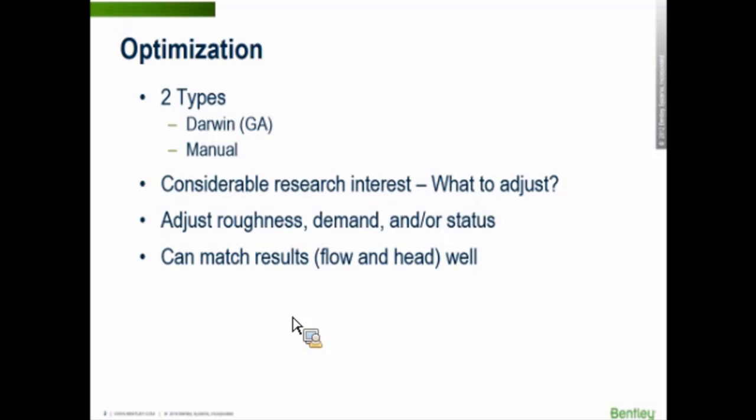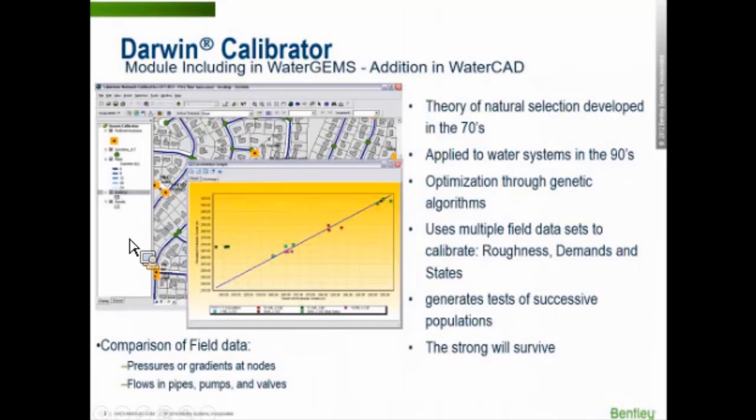So let me introduce Darwin Calibrator here and what it actually does. It uses a genetic algorithm to change roughness, demands, and valve states across the system. There could be 500 valves, a thousand valves, a couple thousand pipes with different C factors, a couple thousand demand nodes. Changing all of these manually—that's thousands of different variables to change, not to mention the millions of different combinations. In the next few slides you're going to see how Darwin Calibrator uses a genetic algorithm to very quickly make short work of all these millions and millions of different combinations.